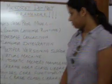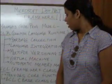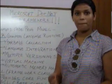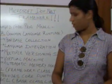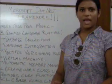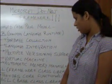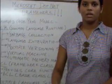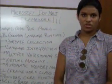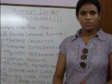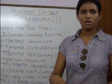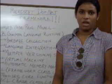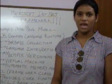Virtual machine: CLR manages the running code just like a virtual machine. Automatic memory management states that the memory allocations in objects and buffers is done automatically using the managed heap.